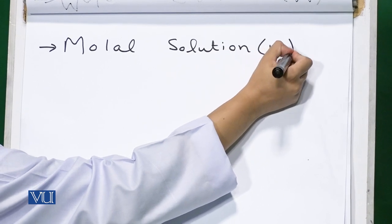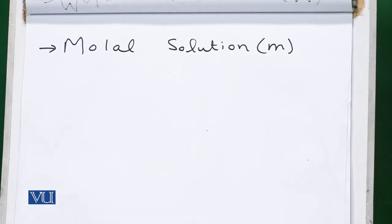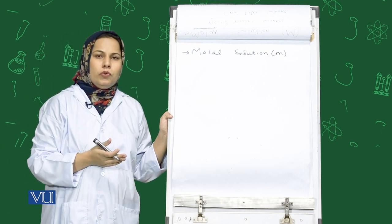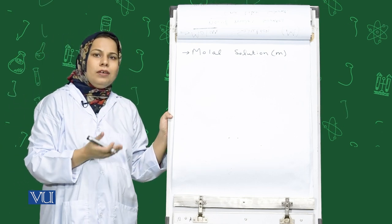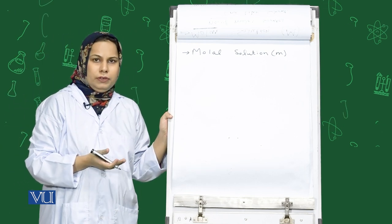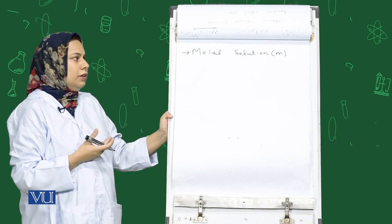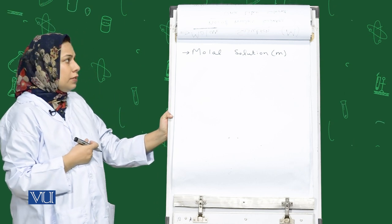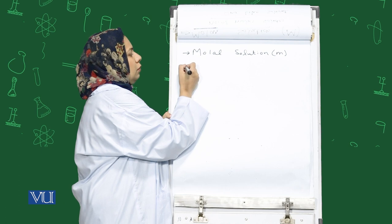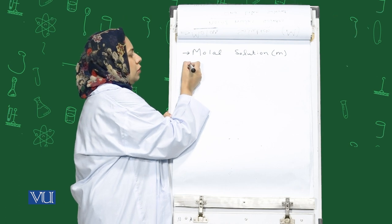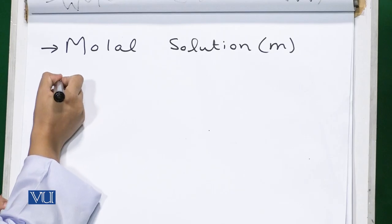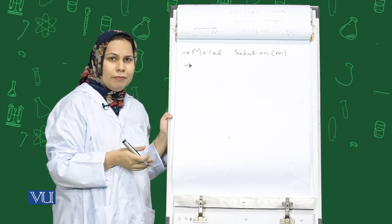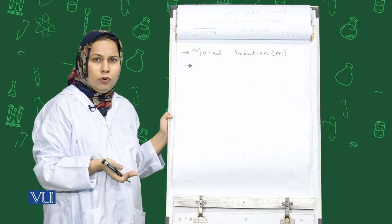Molal solution is denoted by small m. In this, we need to have number of moles per kilogram of the solvent — that means the solvent is measured in kilograms. But usually we will use molar solution, and the rest of the solutions we are going to prepare for this experiment are molar.